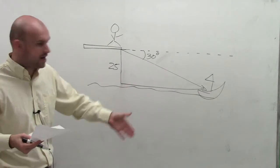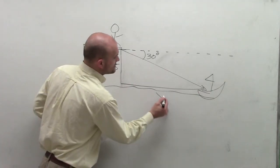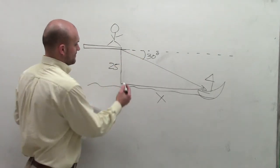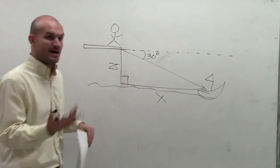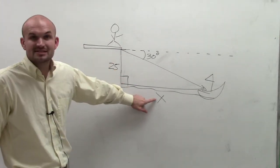What they want us to figure out is how far is the person away from the boat. So we need to make sure we create a right triangle. We have a right angle here, we have the height, and we have this side.